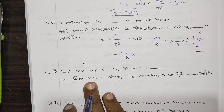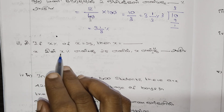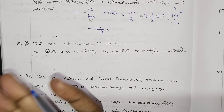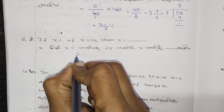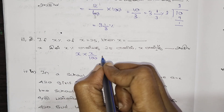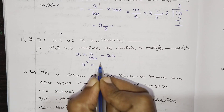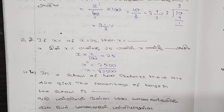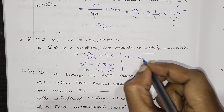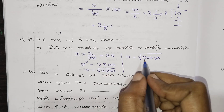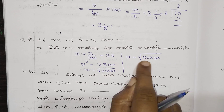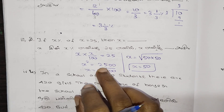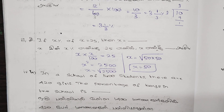Next question: X percentage of X equals 25. So X by 100 into X equals 25. X squared by 100 equals 25. Therefore X squared equals 2500. X equals square root of 2500. The square root of 2500 is 50. So X equals 50.